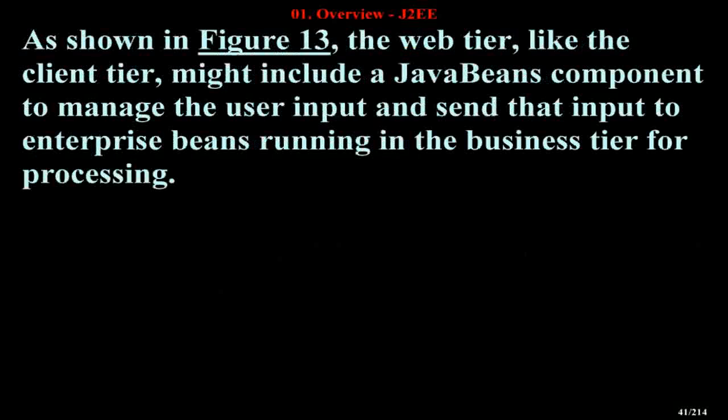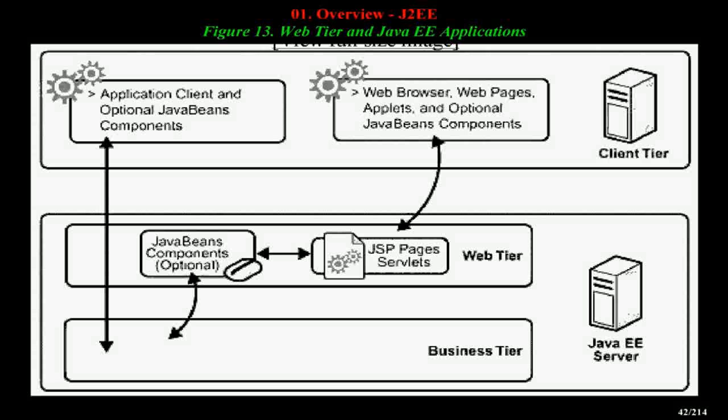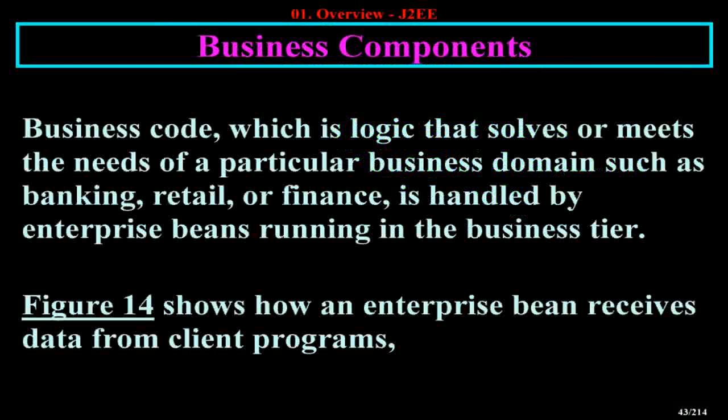As shown in Figure 13, the web tier, like the client tier, might include a JavaBeans component to manage the user input and send that input to EnterpriseBeans running in the business tier for processing. Business logic — which is logic that solves or meets the needs of a particular business domain such as banking, retail, or finance — is handled by EnterpriseBeans running in the business tier. Figure 14 shows how an EnterpriseBean receives data from client programs.